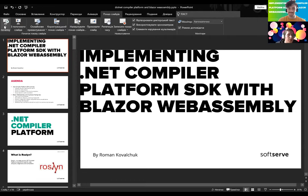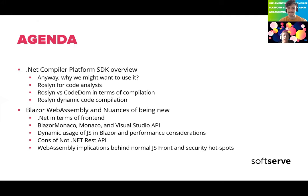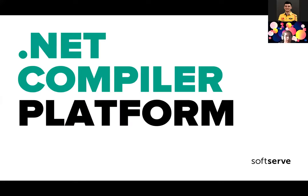Today's topic is implementing the .NET compile platform with Blazor WebAssembly. The agenda covers: the .NET compile platform overview, why we might want to use it, Roslyn for code analysis, CodeDOM and a comparison between those, dynamic code compilation, and finally Blazor WebAssembly — a very new framework for front-end development.